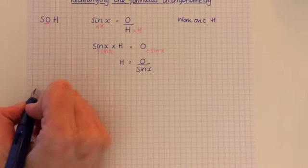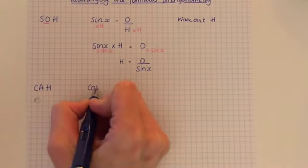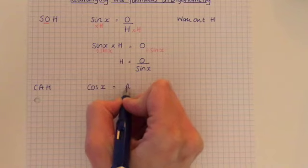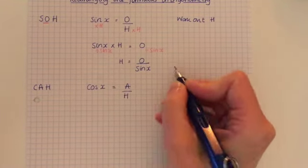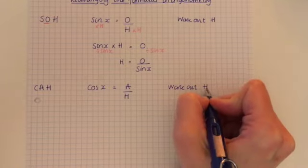So the next one we'll do CAH, we'll do the same thing. So cos X equals A over H. So work out H.